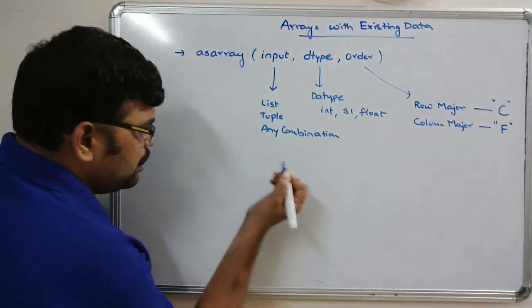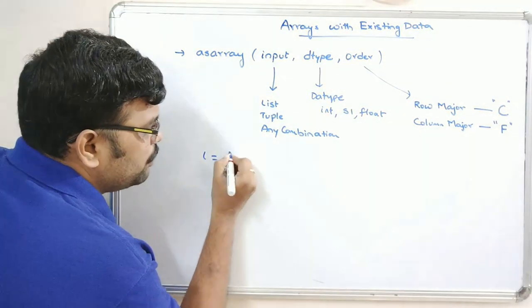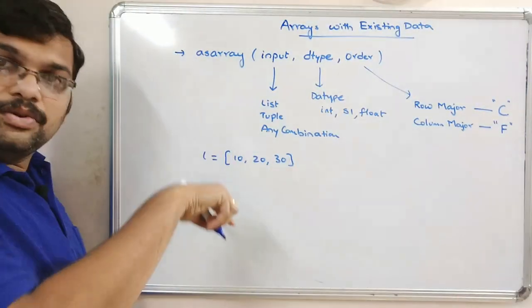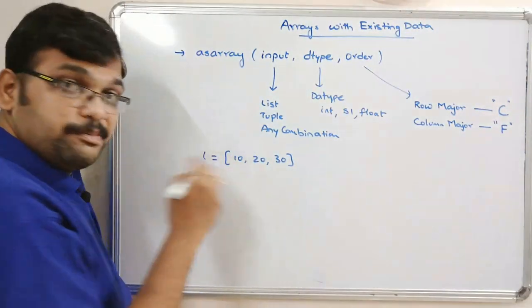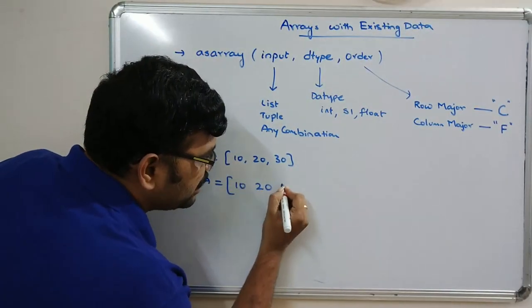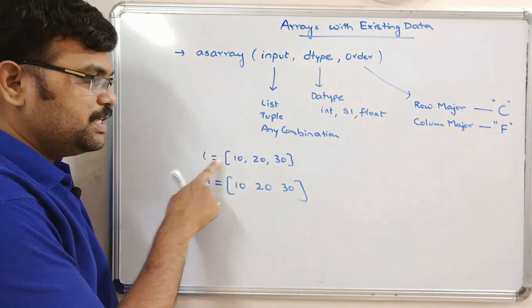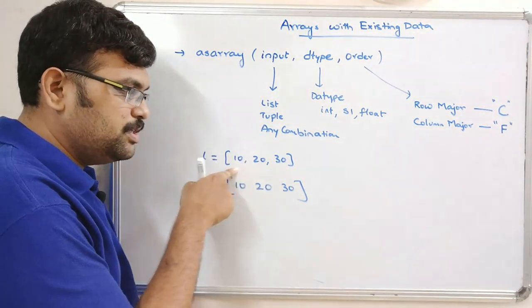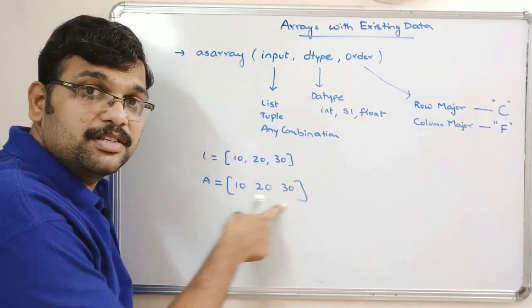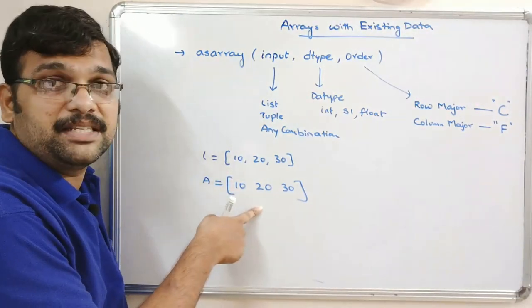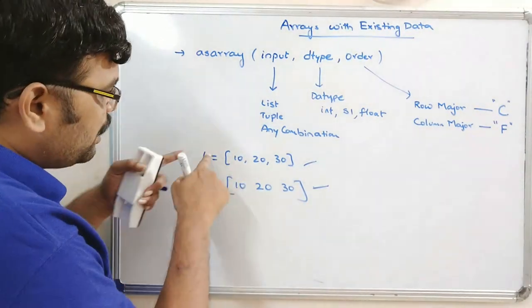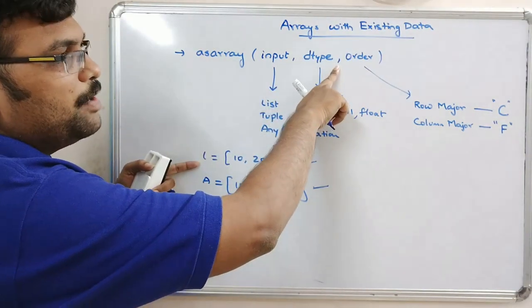Let's take an example: some list `l` equal to `[10, 20, 30]`. We'll convert this into an array. The difference between a list and an array: a list separates elements with commas, while an array separates elements with spaces. Both are not equal — one is a list, the other is an array.